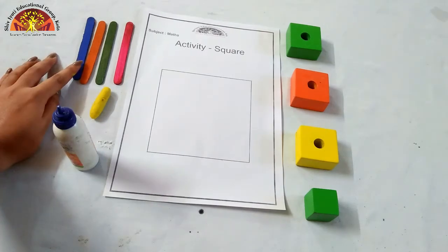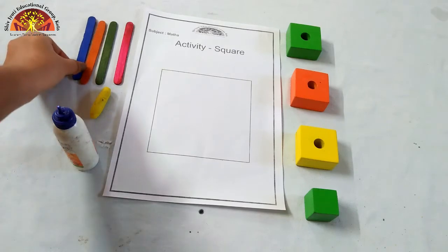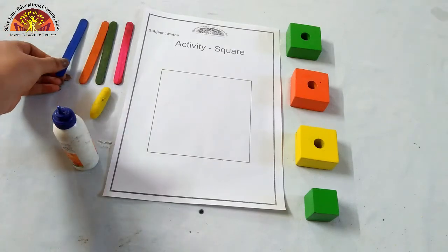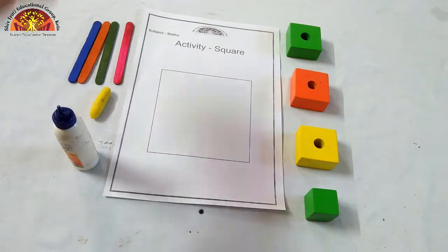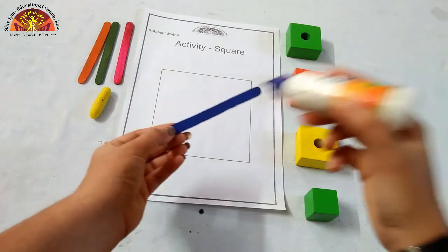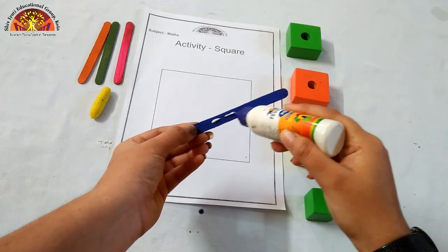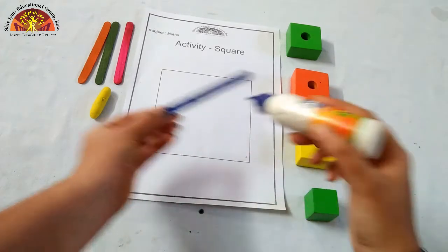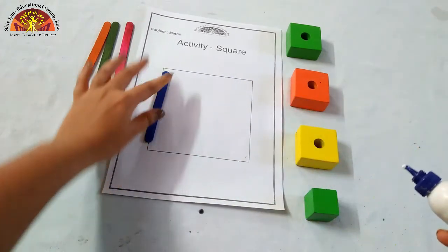Now, we will paste all these ice cream sticks one by one over here with the help of favicol. Let's start kids. Apply favicol like this and paste it over here.